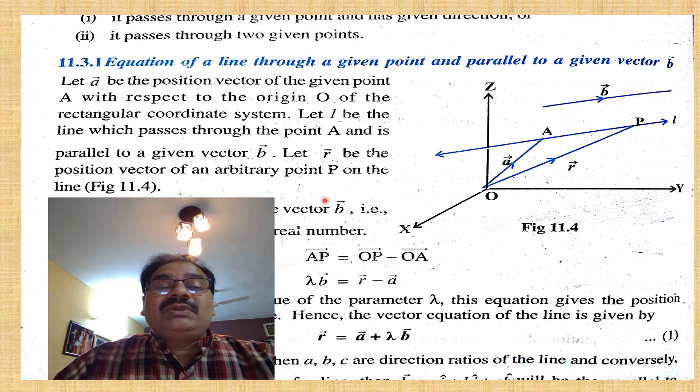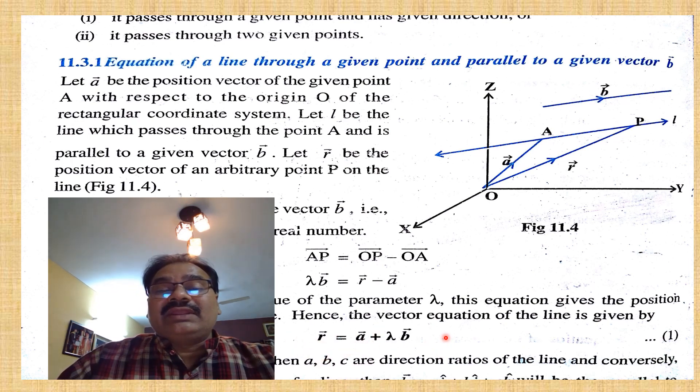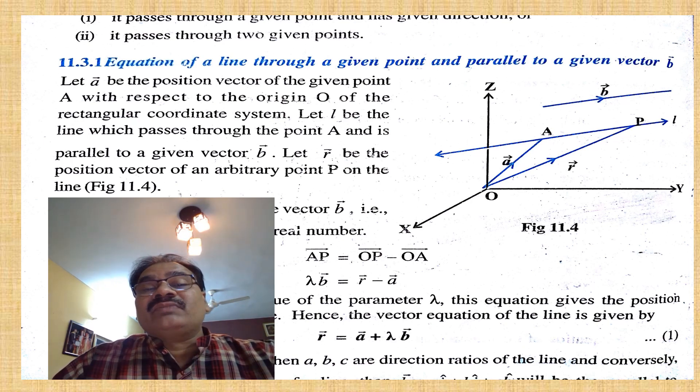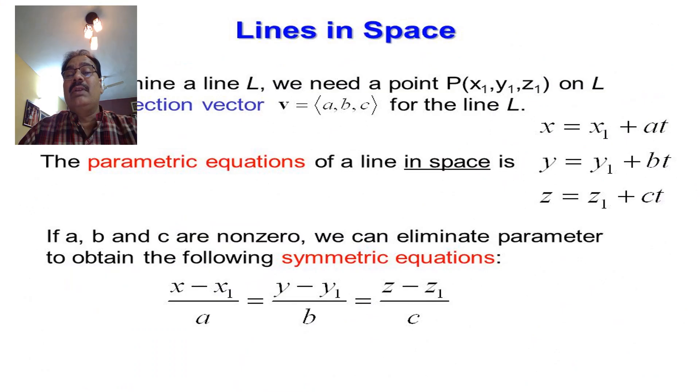Since AP is parallel to vector b, we can write AP = λb, where λ is some real number. On simplification, the equation becomes: r = a + λb. This is the equation of a line through a given point and parallel to a given vector.